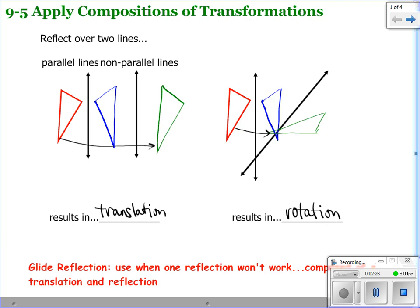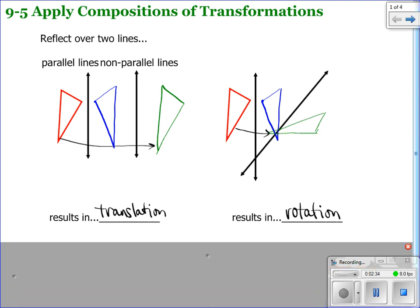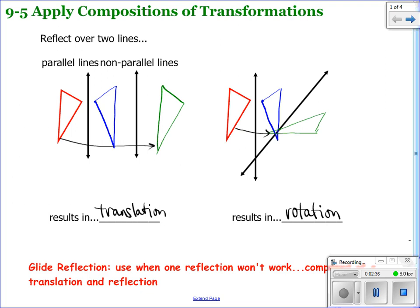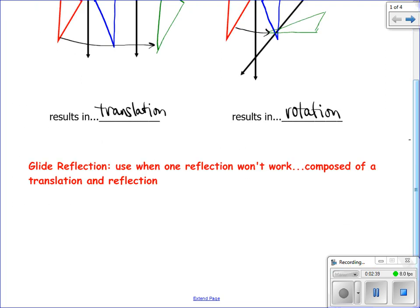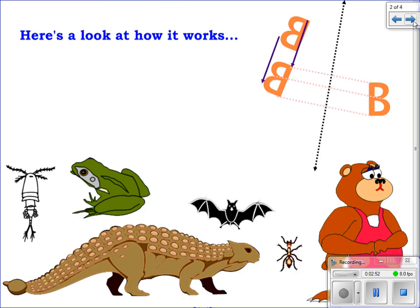So this isn't anything new. It may look new because you've never seen glide reflection before. But what it's essentially asking you to do is first glide it or translate it, slide it, and then reflect it. So it's a two-step composition. A picture of that is on the next slide. It's taking this B, first sliding it, and then that second B, then reflecting it over something. So we're going to practice one of these two-step transformations called a composition.